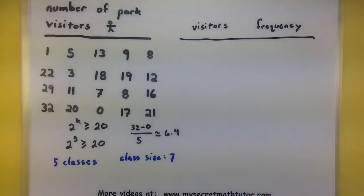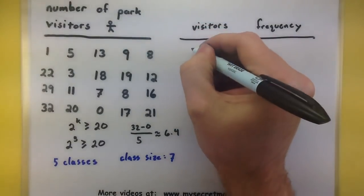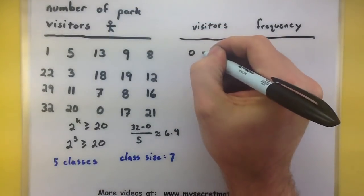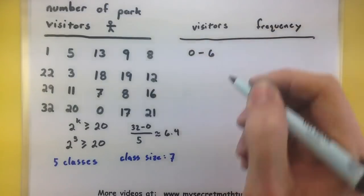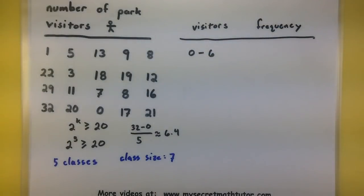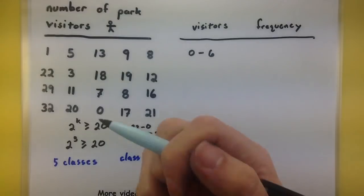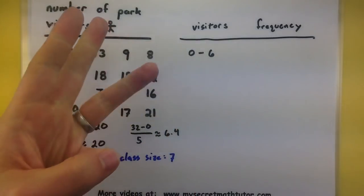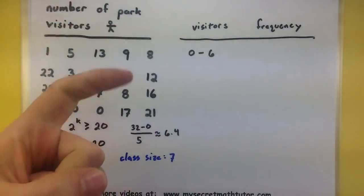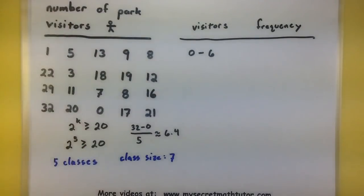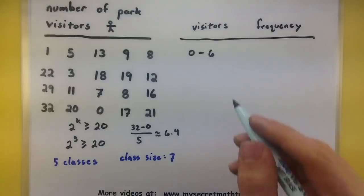So I want to make sure that each of my classes contains 7 in terms of my data points. So my first class will go 0 through 6. Now you might be wondering, wait a minute, that looks like it only contains 6, but it does contain 7 because of that 0. So think, you got 0, 1, 2, 3, 4, 5, 6. 7 is the size.